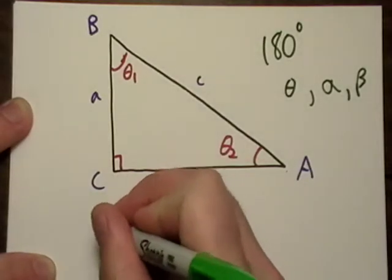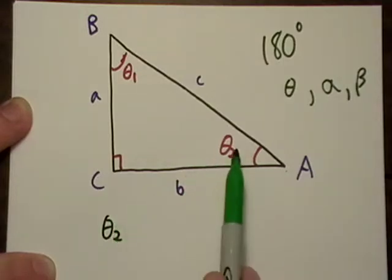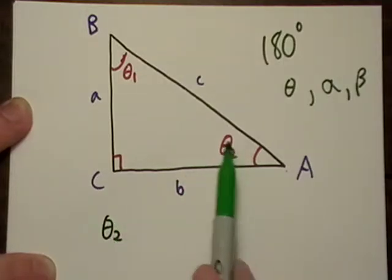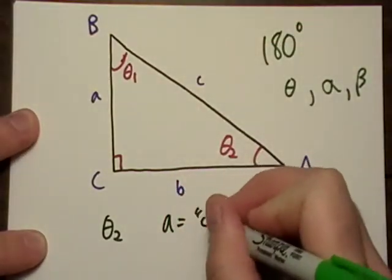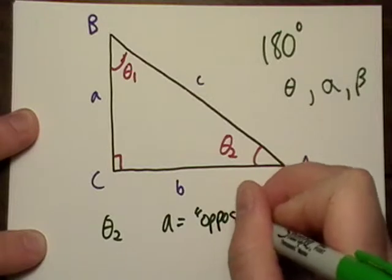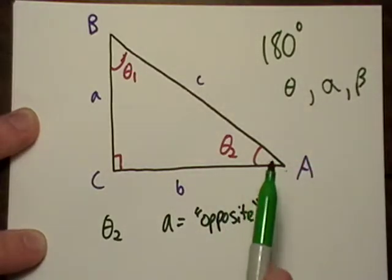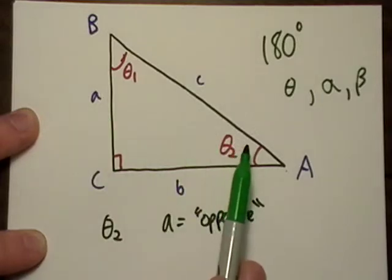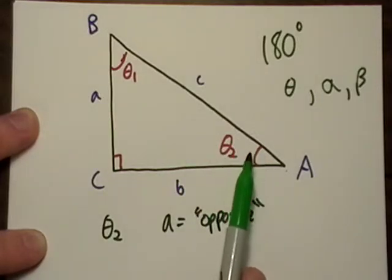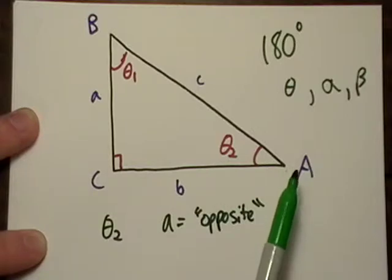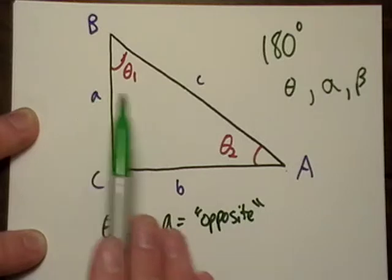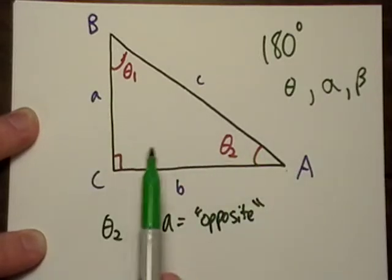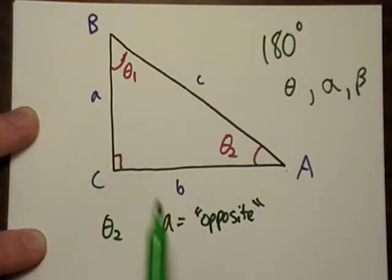Let's just talk about theta two. From the perspective of theta two, side A would be called the opposite side. That's pretty easy to remember because A is opposite of angle theta right here. It's just across, just opposite.